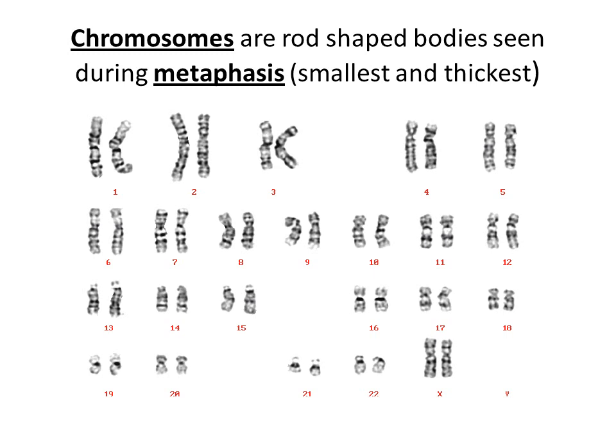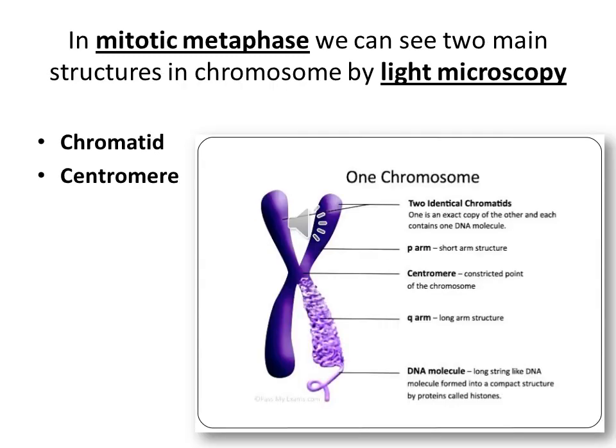The cell division is arrested, usually in metaphase, when the chromosome is most condensed. Then they are sorted according to the size of the chromosome and the position of the centromere. We have two copies of each somatic chromosome except sex chromosomes. Now let's see what chromatid and centromere are — the two main structures that we can see in mitotic metaphase.